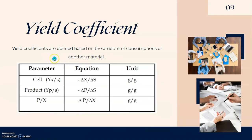Yield coefficient is generally defined based on the amount of consumption of another material. I give you three yield coefficients here, which are cell yield coefficient, product yield coefficient, and also the product over biomass yield coefficient. The equations are given here, which are the difference between the biomass and the difference in substrate concentration. And Δp is the difference in product concentrations. All the units for yield coefficient are given in grams per gram.